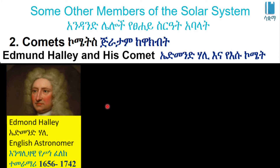Edmund Halley was an English Astronomer who made significant observations of comets.